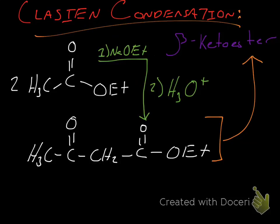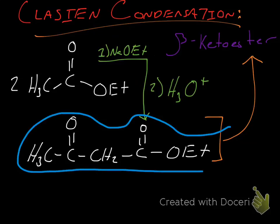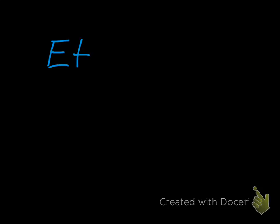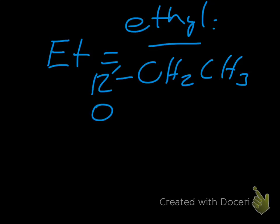We have our ethyl acetate — two equivalents of it — reacted with sodium ethoxide and then hydronium as our second reagent. That's going to form a beta-ketoester. We have two carbonyl groups and then our ester with the oxygen and ethyl group. Just a quick nomenclature note: whenever we see 'Et,' that's just an ethyl group, which is CH2CH3 connected to some kind of R group or oxygen. It's just easier to write Et.